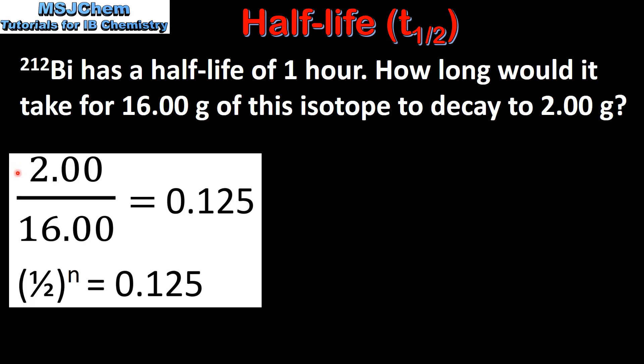The first step is to divide the remaining mass by the original mass which gives us 0.125. Therefore half raised to the power n, where n is the number of half-lives that have passed, equals 0.125.